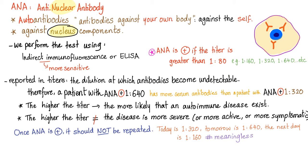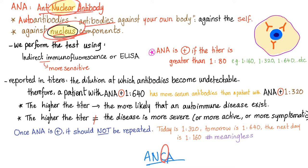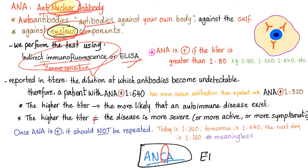We have talked about antinuclear antibodies before. They are antibodies against the nucleus. This is different from antineutrophilic cytoplasmic antibodies, which are antibodies against the cytoplasm, not the nucleus — only of neutrophils and monocytes. For testing, we use ELISA or immunofluorescence. In cases of ANA, indirect immunofluorescence is superior to ELISA. In contrast, for ANCA, ELISA is superior to indirect immunofluorescence, because immunofluorescence depends on the observer, making it more subjective. ELISA is more objective.